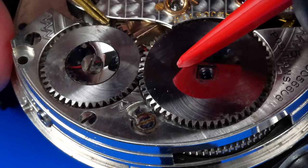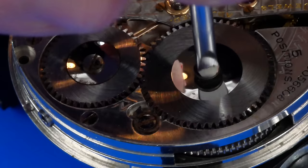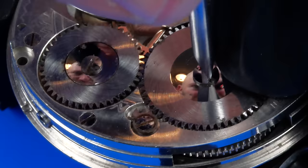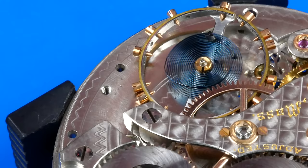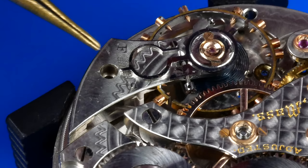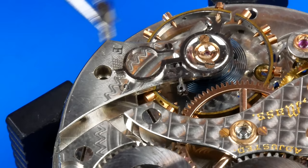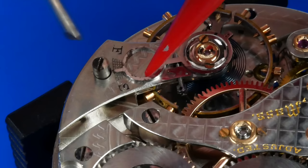The ratchet wheel is now fitted with the barrel arbor. Prior to installing the pallet fork, I'll now test fit the balance to check for freedom of movement, and shake an impulse pin alignment. Doing this now helps immediately identify any issues in this area, which makes it easier to troubleshoot versus when the movement is running. Normally, I would do this before installing the train, but it took a couple of weeks for the new balance staff to arrive, so I decided to make further progress on the rest of the assembly in the meantime.